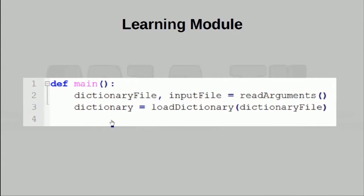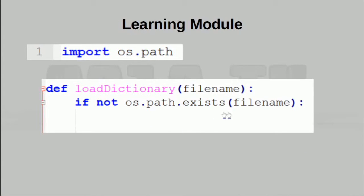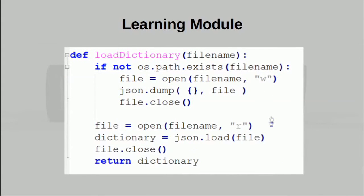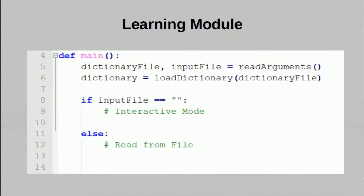Going back to our main function, the next thing we're going to have to do is to actually read the dictionary file. There is a chance that we are actually trying to edit an older dictionary file, which is why this step is necessary. What I also do within this is to check and see if the file actually exists. If it doesn't, I'll take this opportunity to actually create that file. I simply open the file for writing and dump an empty object into the file. This sets up our JSON file and allows us to work with it in the future. We then continue to actually opening the file, read off whatever data structure we can get out of the JSON file, close the file, and return the data structure. Going back to main: if the input file has not been specified, we will enter an interactive mode; otherwise, we simply read from the file.